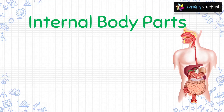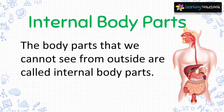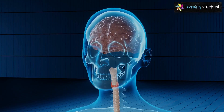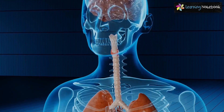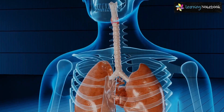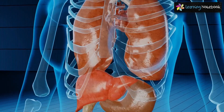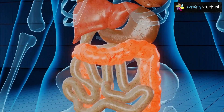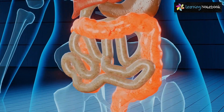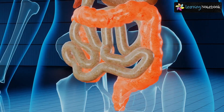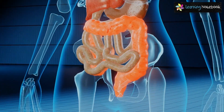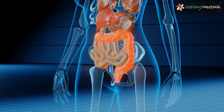What are internal body parts? The body parts that we cannot see from outside are called internal body parts. Such internal body parts are brain, lungs, heart, stomach, liver, large intestine, small intestine and many more.